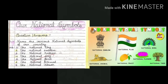Your first question is: name the various national symbols of our country. The national symbols are: first, national flag; second, national emblem; third, national anthem; fourth, national song; fifth, national bird; sixth, national animal; and seventh, national flower. There are seven national symbols in our country.